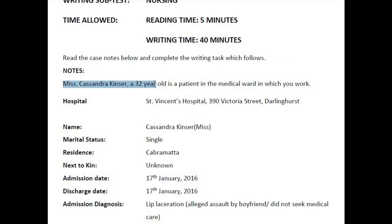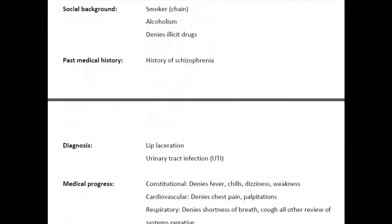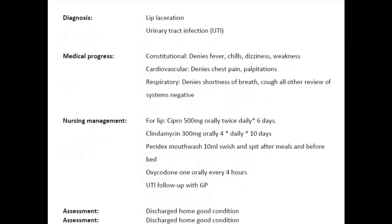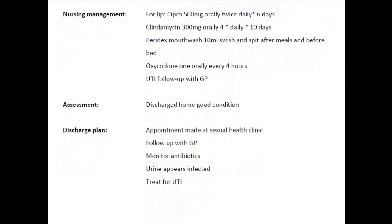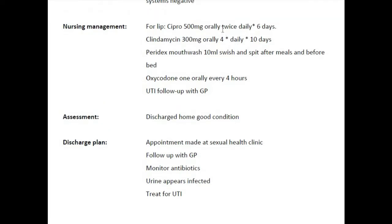The name and age of the patient are important and should be mentioned in the reference part of the letter. You can avoid the marital status, social background, and past medical history while framing the letter, because the GP already knows this information. Admission diagnosis, medical progress, nursing management, assessment, and discharge plan are relevant and should be mentioned. However, you can avoid writing the frequency of medicine usage given under the nursing management section, because this is a letter and not a prescription. You can simply say the medication list is attached with this letter.